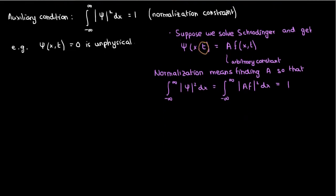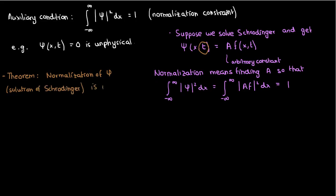The answer is surprisingly no. If you normalize the wave function once, you do not need to normalize for other times — the normalization stays preserved. This is a theorem that I'll prove, and it's not very difficult to prove.